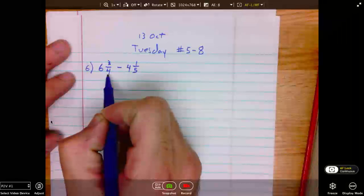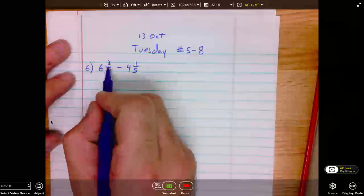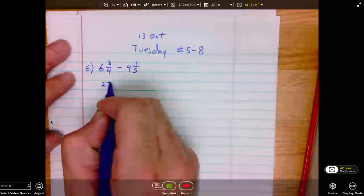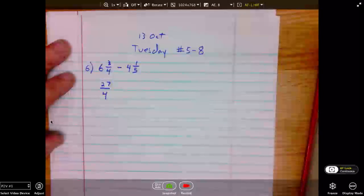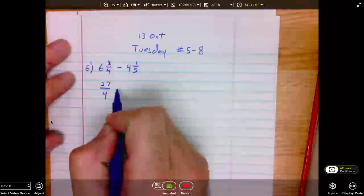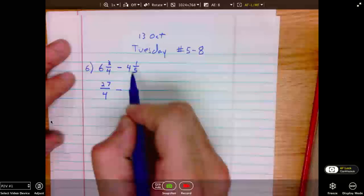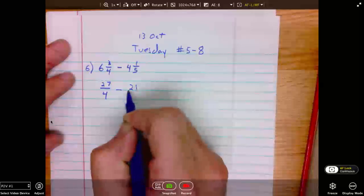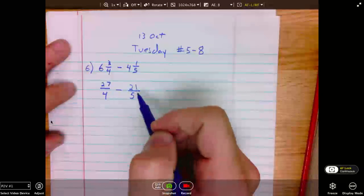6 times 4 is 24 plus 3 is 27. 6 and 3 fourths is equivalent to 27 over 4. Minus 4 times 5 is 20 plus 1 is 21. 21 over 5. 4 and 1 fifth is equivalent to 21 over 5.